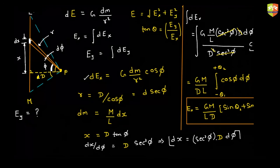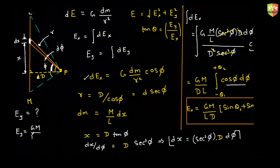For Ey, rather than cos phi, sin phi will come — that's the only difference. So the integral of sin phi d phi with exactly the same limits gives Ey equal to gm by dl times (cos theta 1 minus cos theta 2).